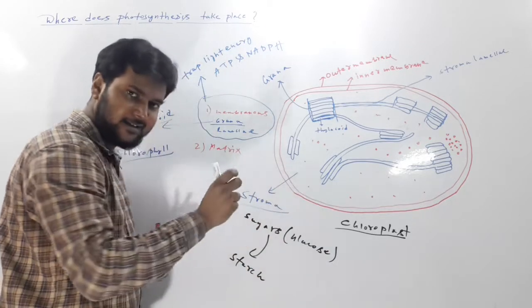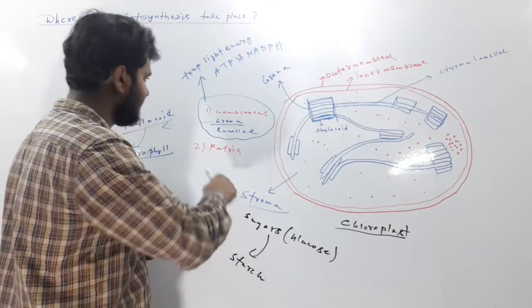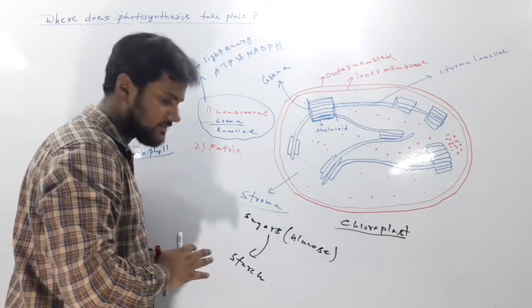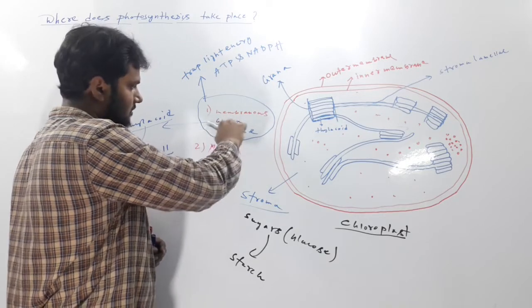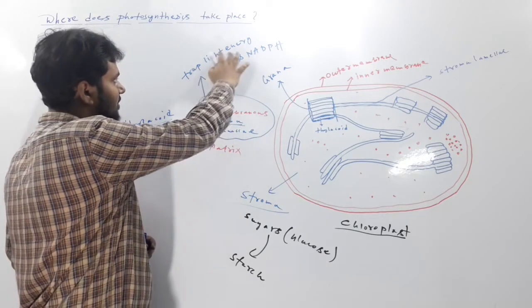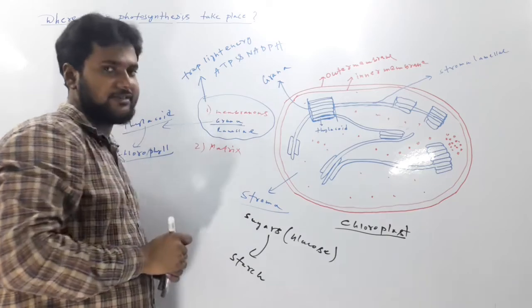So in the stroma there are enzymatic reactions. And in membranous structure, this grana lamelli, these are responsible for trapping light energy, ATP and NADPH2 synthesis.